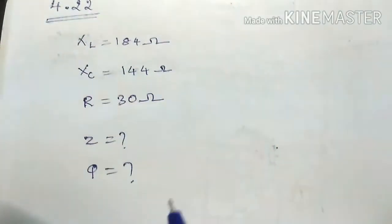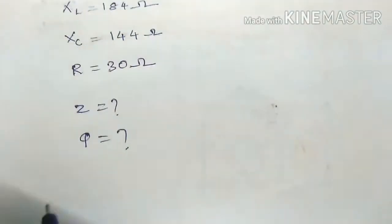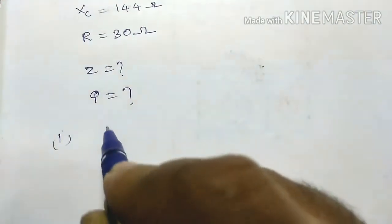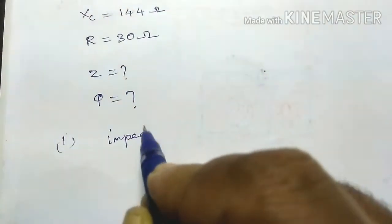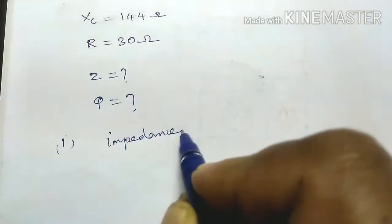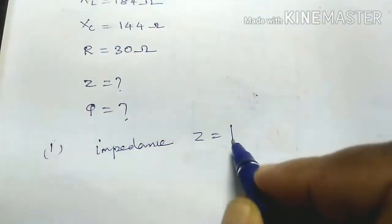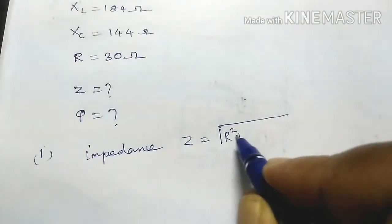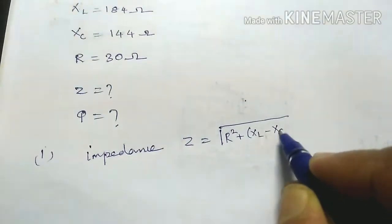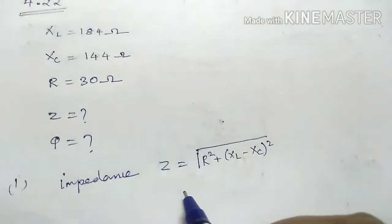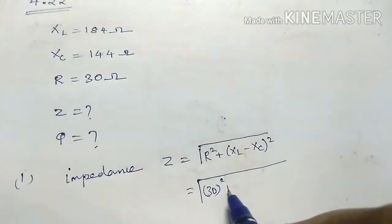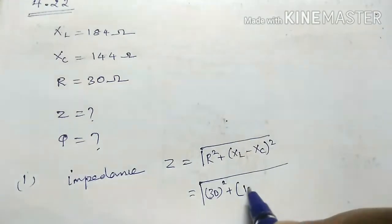Students, given data. First one, find impedance. So impedance, that is Z. Impedance Z equal to formula. R square plus XL minus XC the whole square.